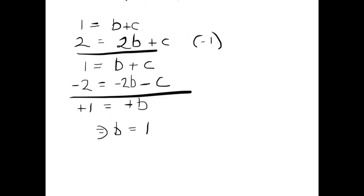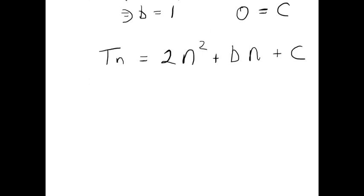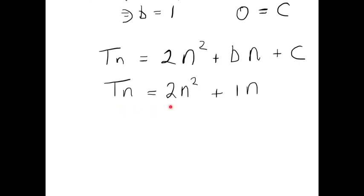To find c, we substitute b equals 1 into the first equation: 1 equals 1 plus c. Taking the 1 over gives 1 minus 1, which is 0, so c equals 0. Now our version of the nth term was 2n squared plus bn plus c. We knew a was 2 since it's half the second difference. Now we know b is 1 and c is 0. So we can finally write down the nth term of this quadratic sequence: the nth term equals 2n squared plus 1n. We don't include a c value because c equals 0.